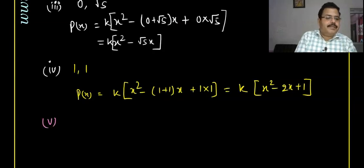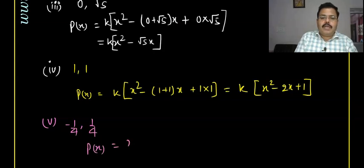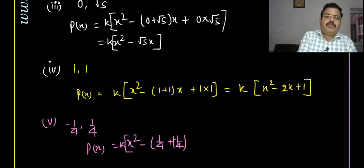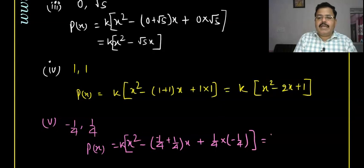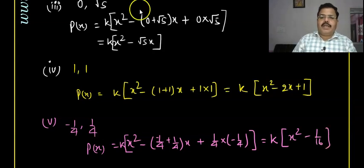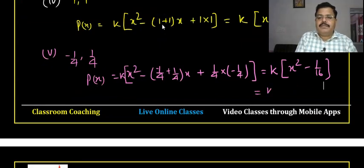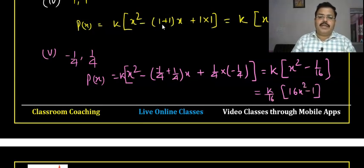For the fifth question, the zeros are -1/4 and 1/4. The polynomial is k times of x² minus (sum of zeros)x plus product of zeros. The sum is 1/4 + (-1/4) = 0, and the product is (1/4)×(-1/4) = -1/16. So we get k times of (x² - 1/16), which can be written as k/16 times (16x² - 1).